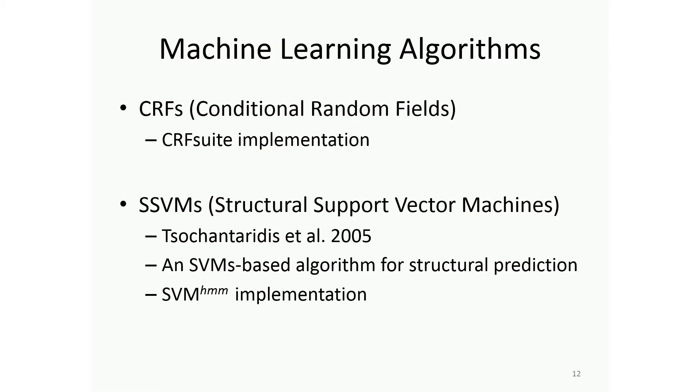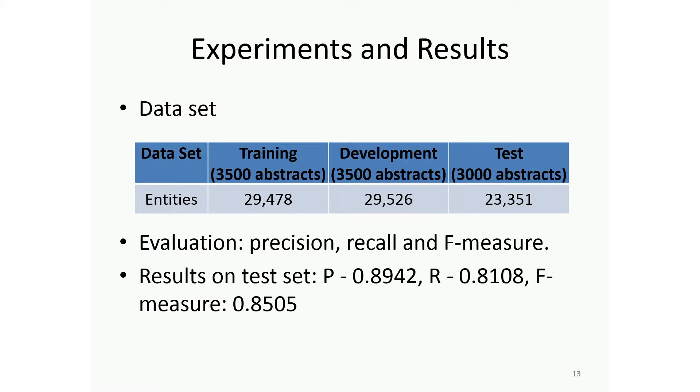Then you have machine learning algorithms that help you build a model to predict it. I'll give a little bit about the performance. In the challenge, they annotated 3,500 abstracts for training, developed another 3,500, and they annotated a test set for 3,000 abstracts. Our performance in this event: you develop a new system, then evaluate on the test set, which you didn't see and don't have the label. It's about 89%, which is actually pretty good. Precision is if you predict 100, how many of them are correct. That basically means about 90% are correct.